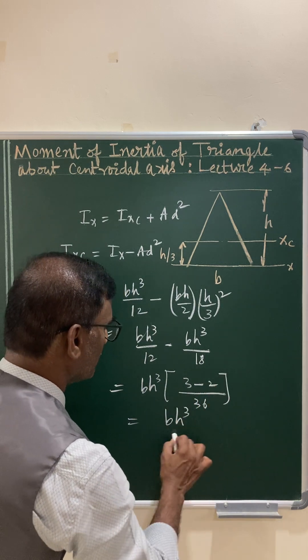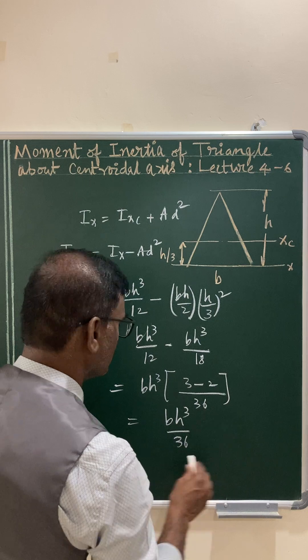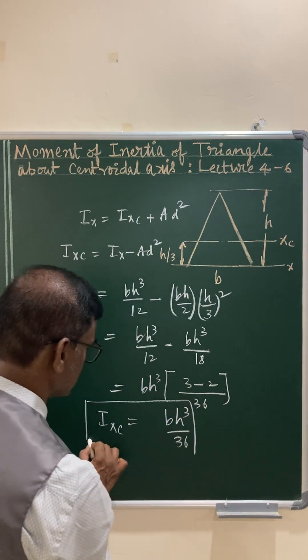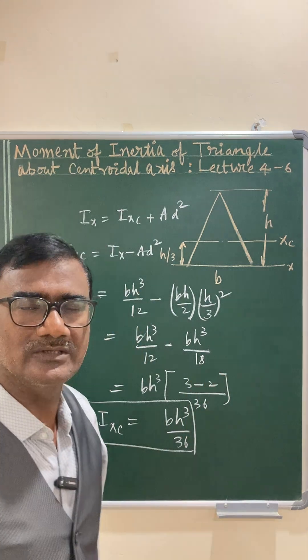You have bh³/36 as the moment of inertia of a triangle about its central axis. Thank you for watching this video.